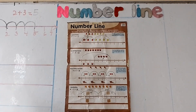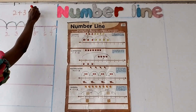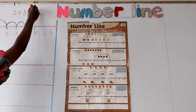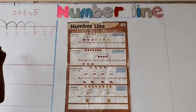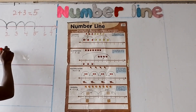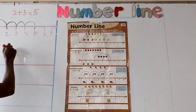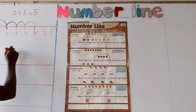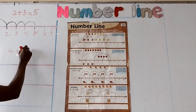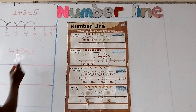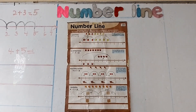My answer is 5. Now let's solve another one. 4 plus 5 using the number line.